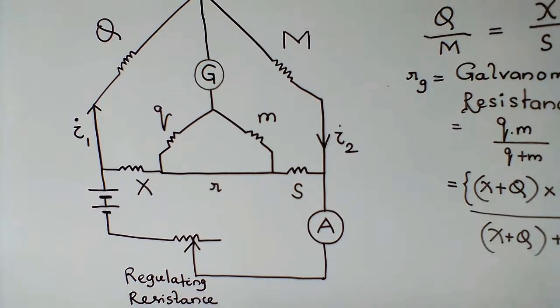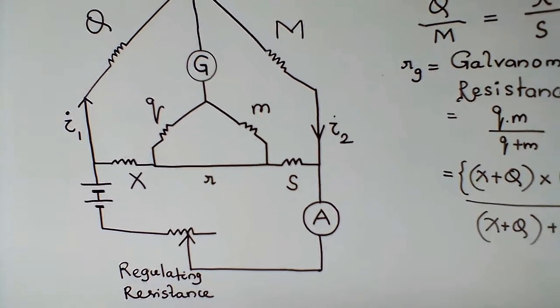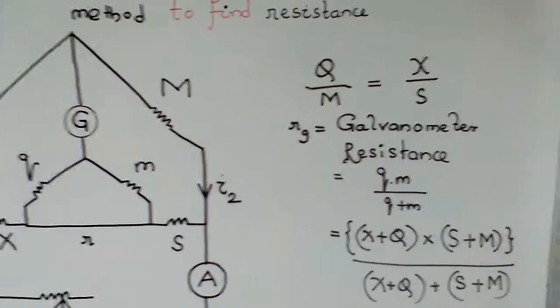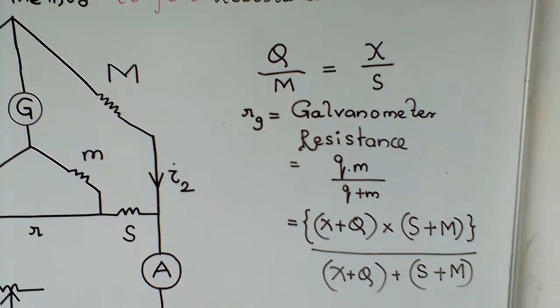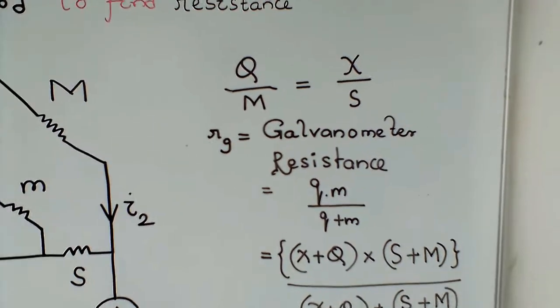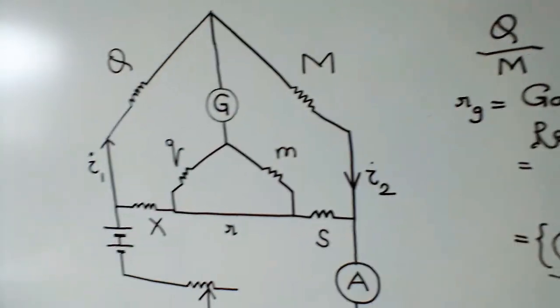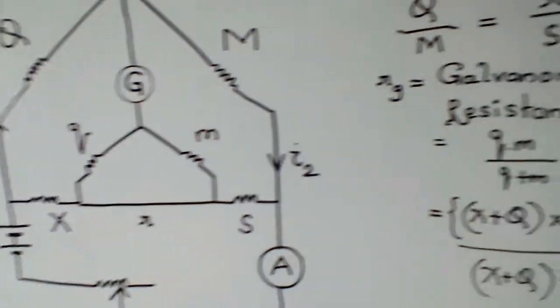Simplifying, I can say at balanced load or balanced condition, capital Q by capital M is equal to capital X by capital S. This is true for balanced condition.